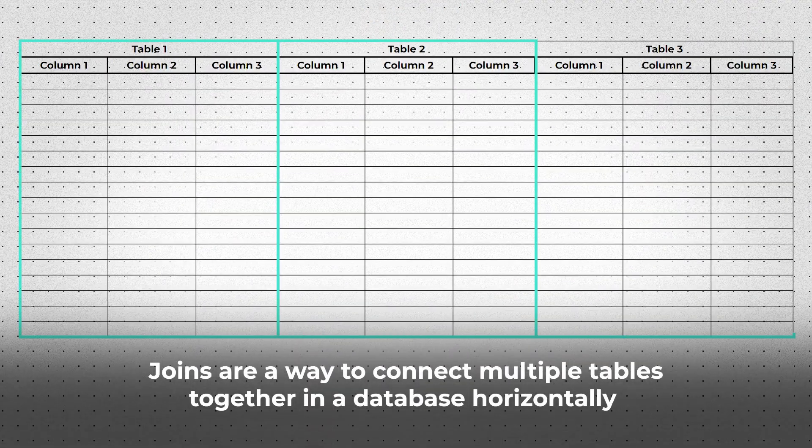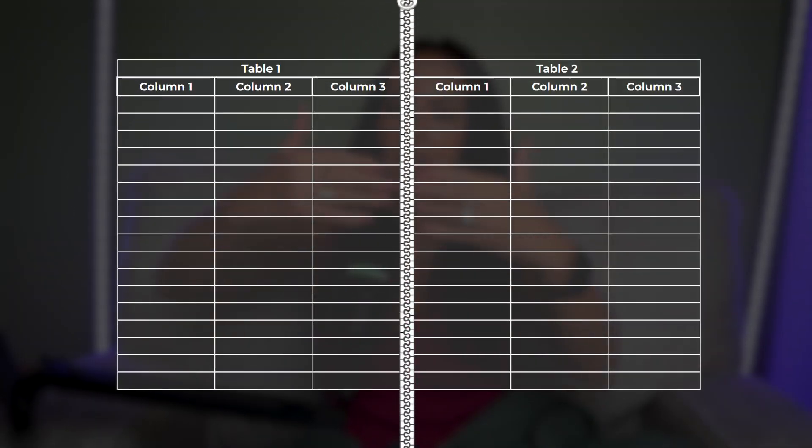Let's first break down what a join is. Joins are a way to connect multiple tables together in a database horizontally. In the real world, very rarely do you have all the data you need in one single table. Usually you have to connect to multiple tables, grab data points from different tables, and connect them together in one SQL query and one output. We do this using joins — we glue the tables together horizontally by matching up rows on a common key. It's kind of like getting a zipper and zipping up the tables.